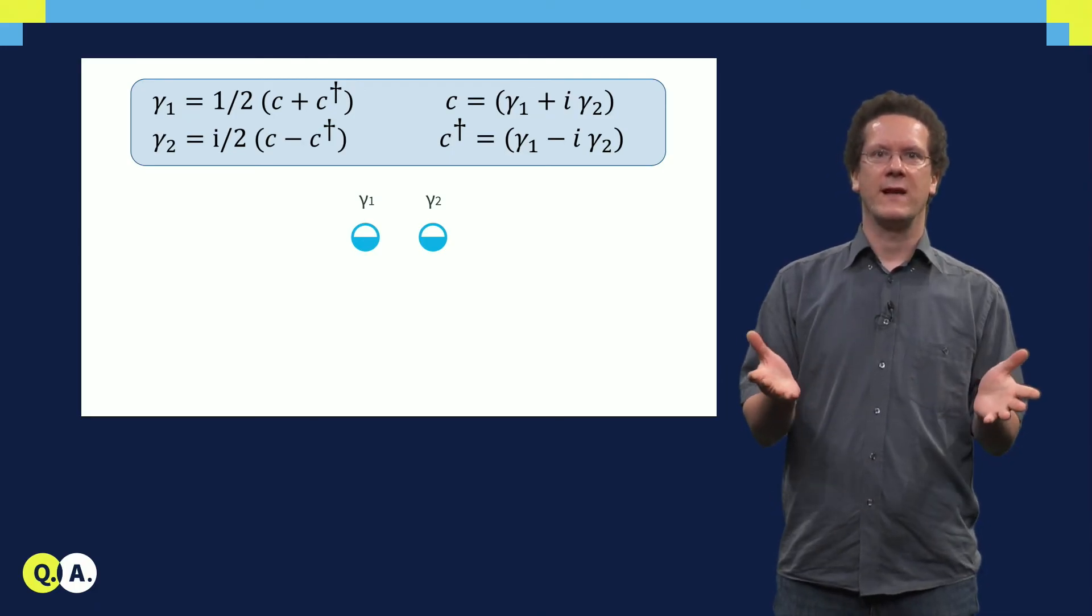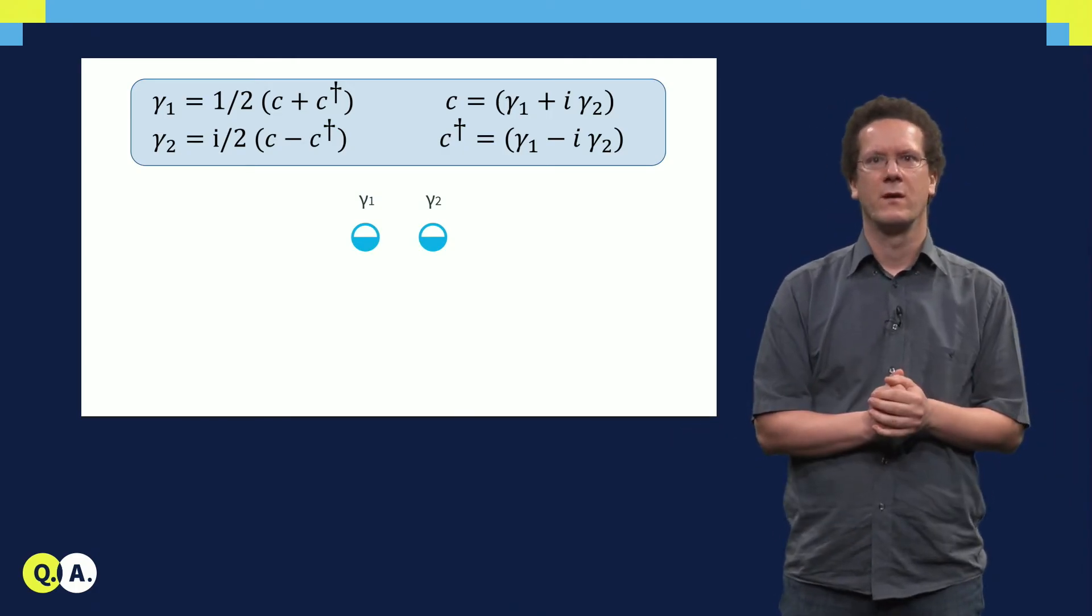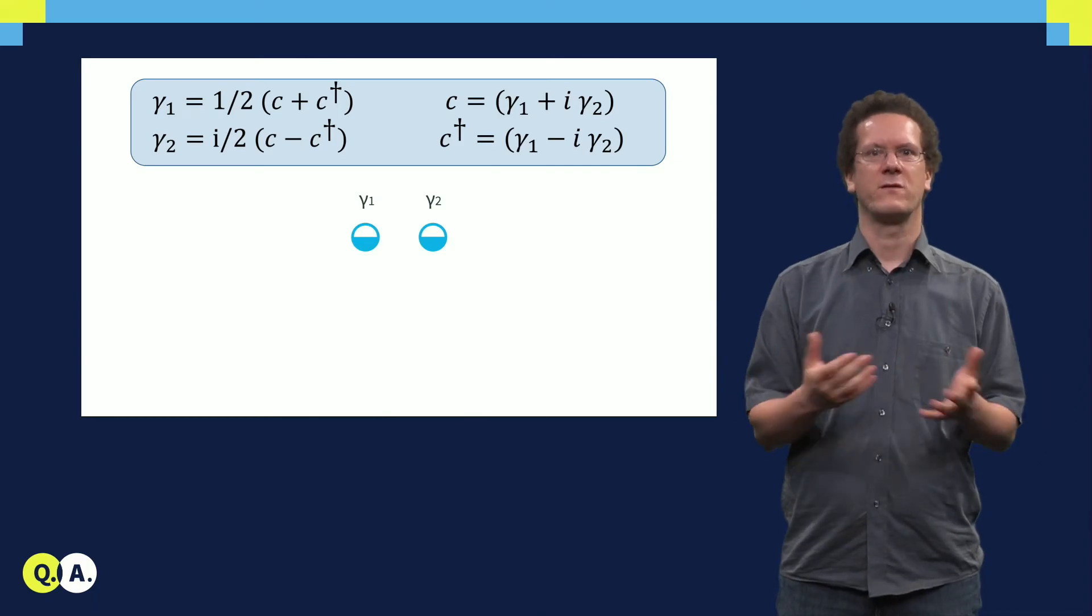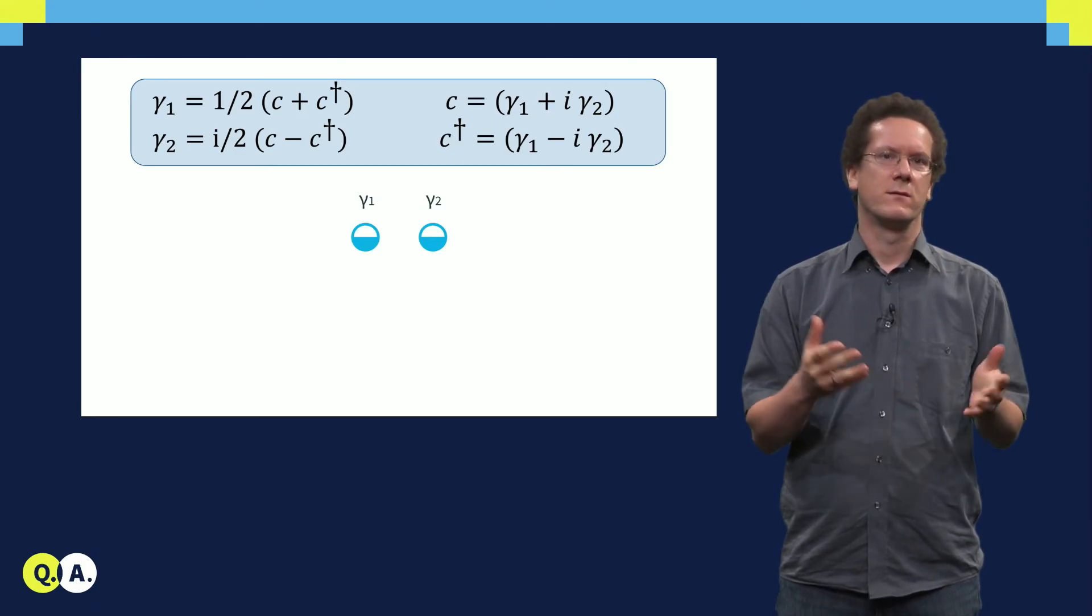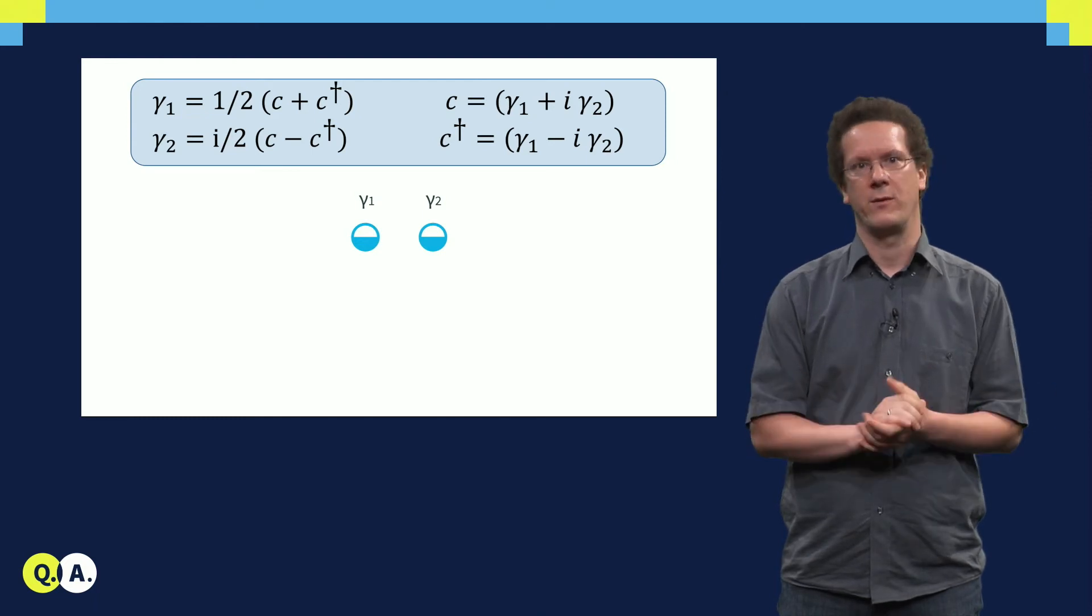Graphically, you can see that these states are at the same time occupied and unoccupied. Of course, this was just a mathematical trick, a transformation to go from one basis to another. What you see here is that still, one ordinary fermion operator can always be described by two Majorana operators.